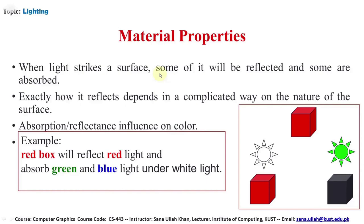Material properties: different types of objects are composed of different materials, and each material has its own properties. When light strikes a surface, some of it will be reflected and some will be absorbed, based on the material properties. Exactly how it reflects depends in a complicated way on the nature of the surface; absorption and reflectance influence the color. For example, a red box will reflect red light and absorb green and blue light under white light — only the red component is reflected and all other colors are absorbed.